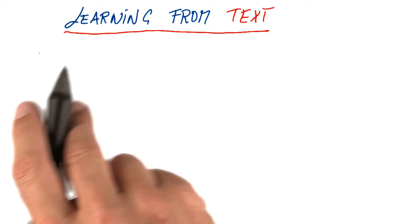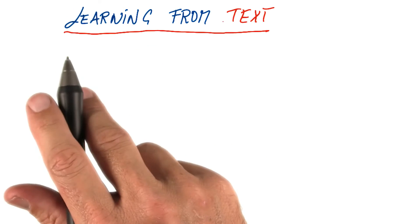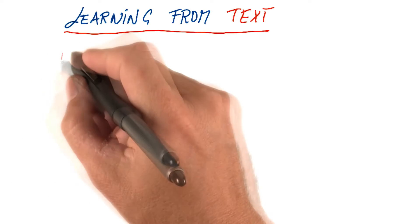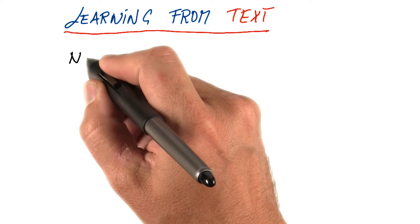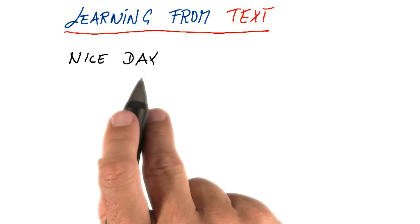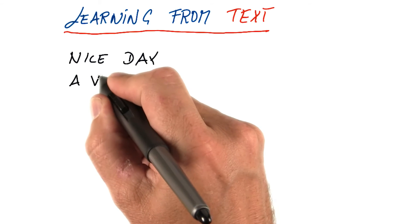The fundamental question in learning from text has to do with what's the input feature. And I'm going to give you an example and ask you a question. Suppose you have two strings, two kind of sentences. One is called nice day and one is called a very nice day.